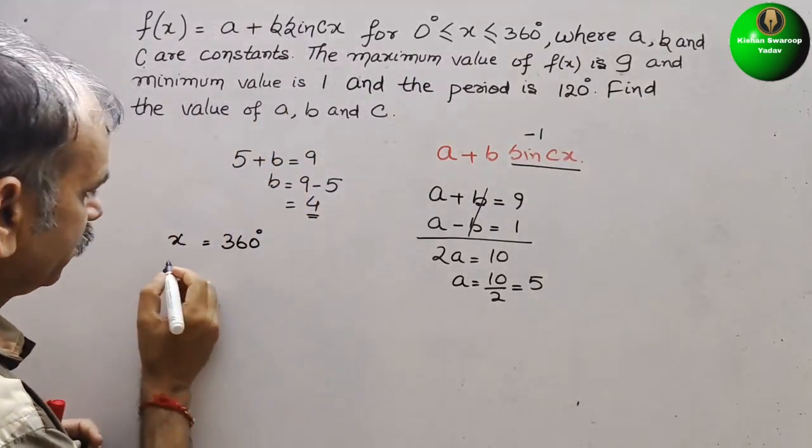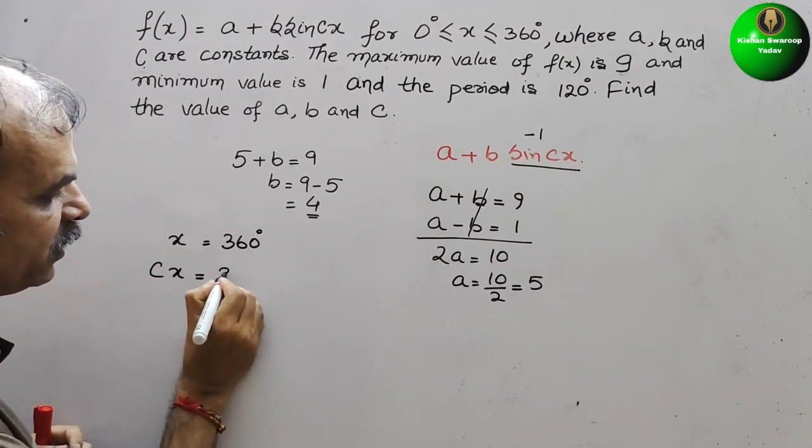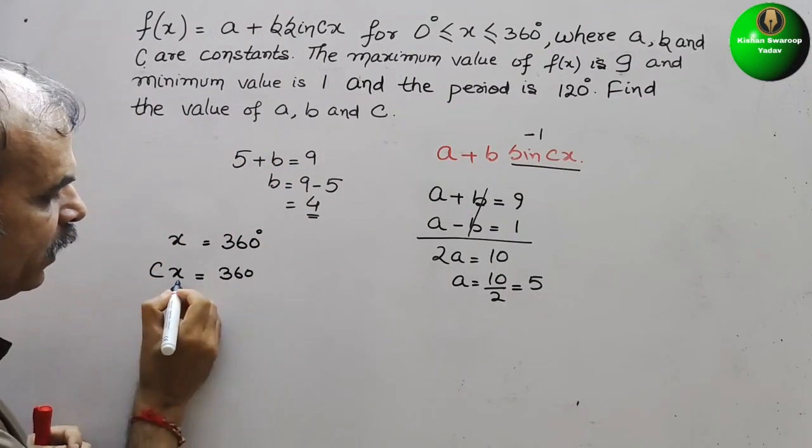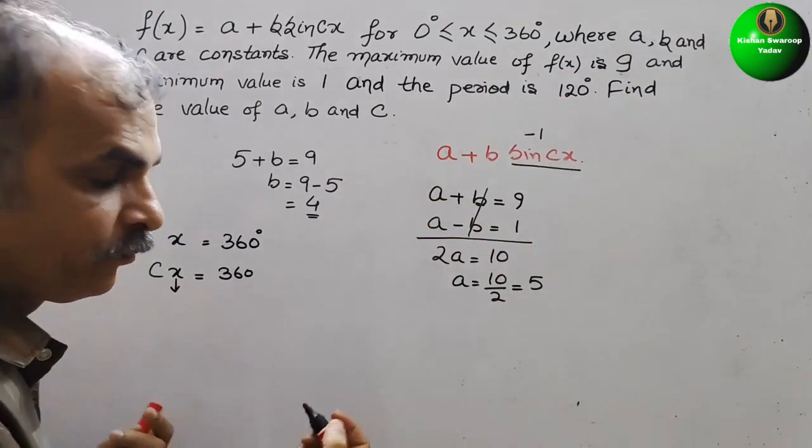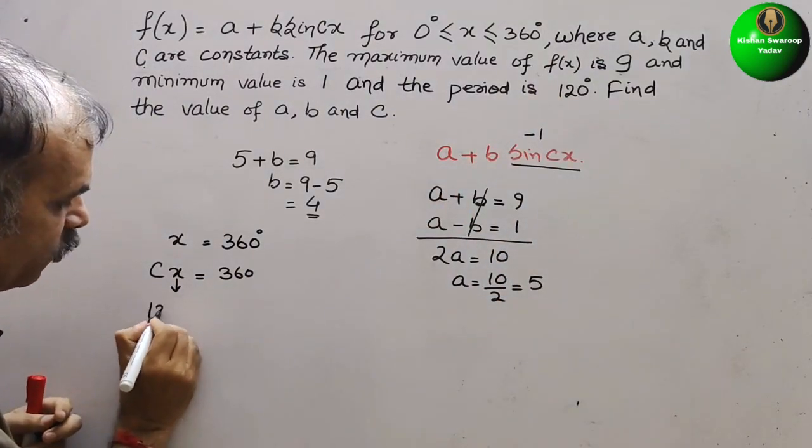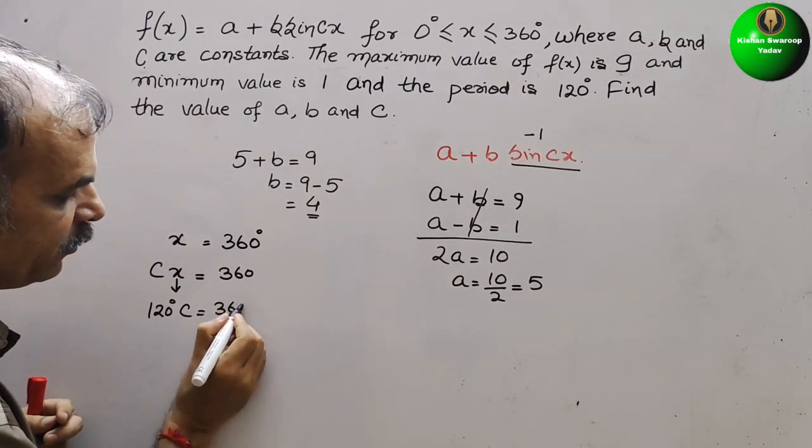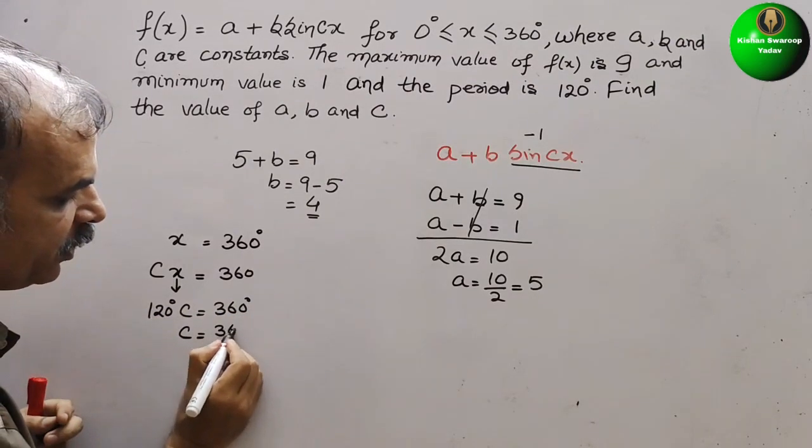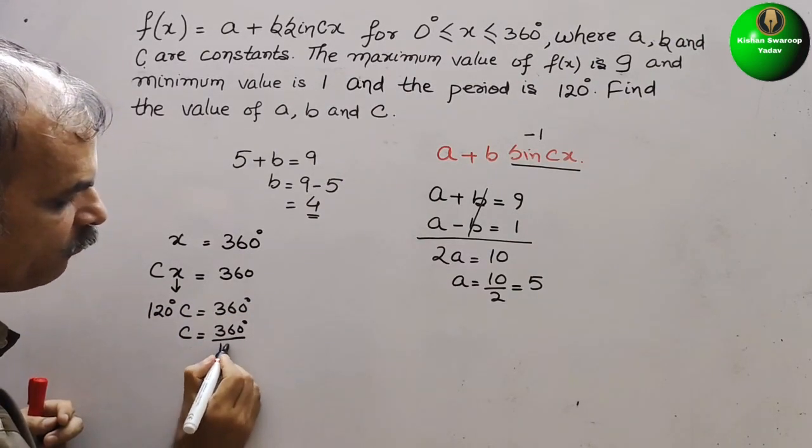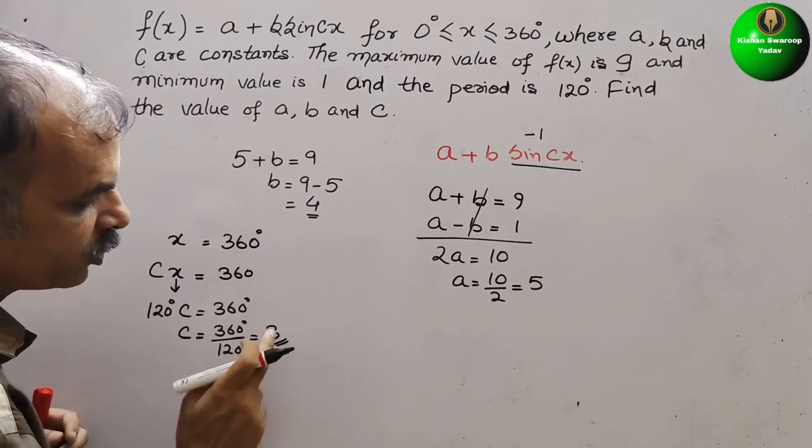So here, we will write Cx is equal to 360 degrees, x they have already given 120 degrees. So we will write 120 degrees C is equal to 360 degrees. So C is nothing but 360 degrees divided by 120 degrees that is equal to 3. So C is 3.